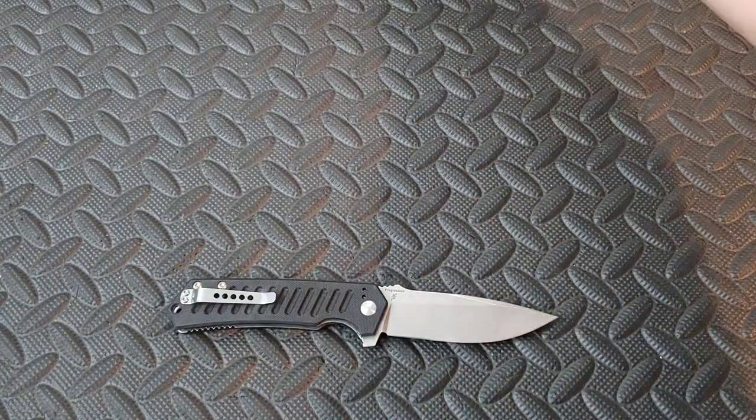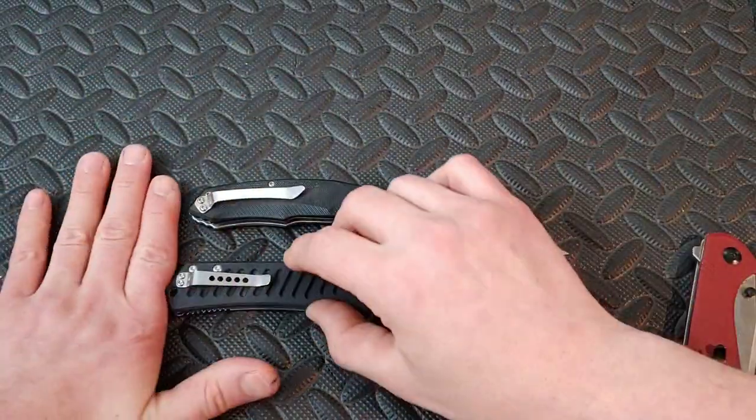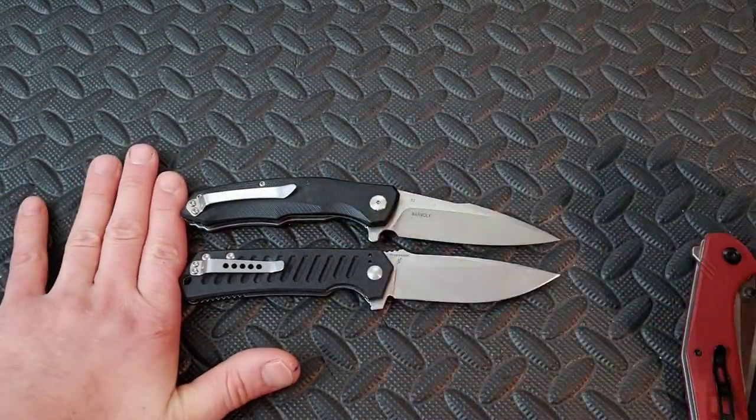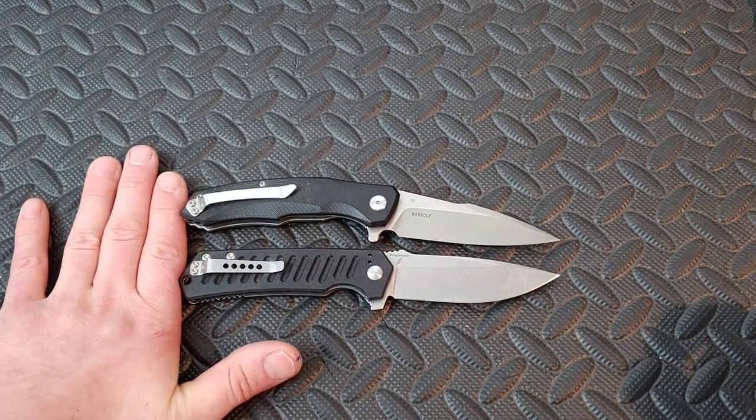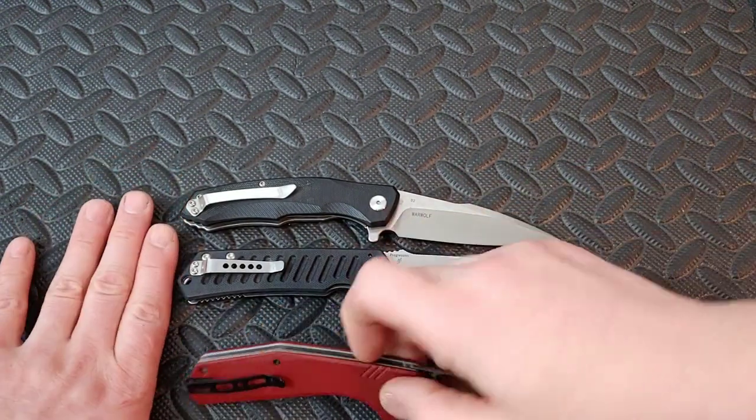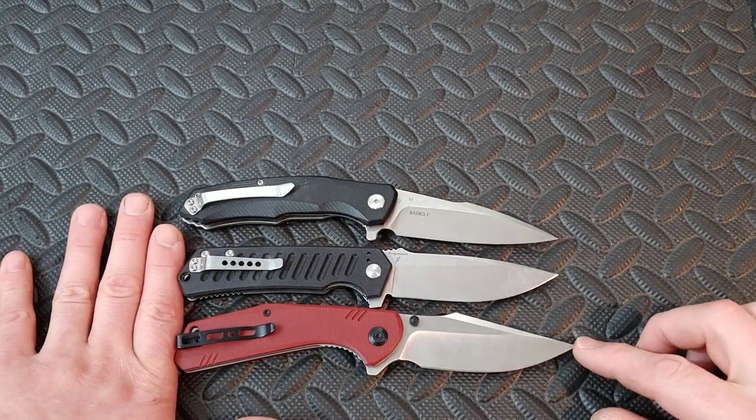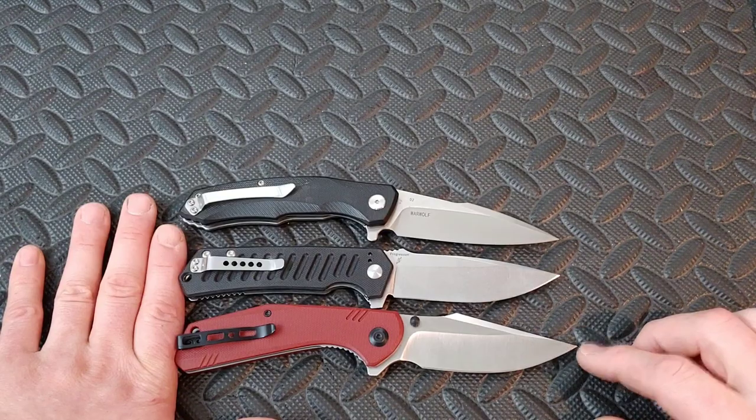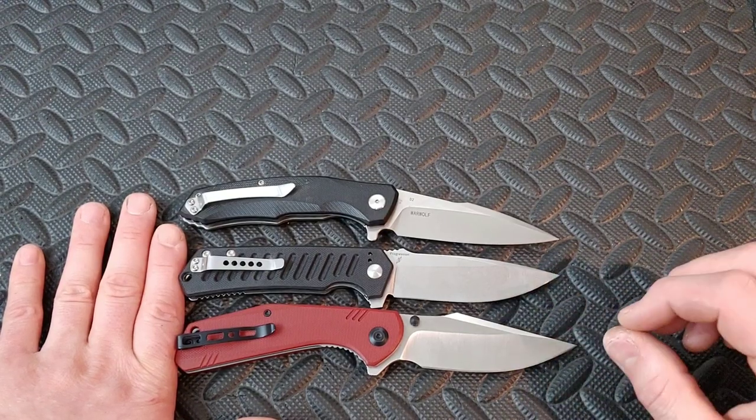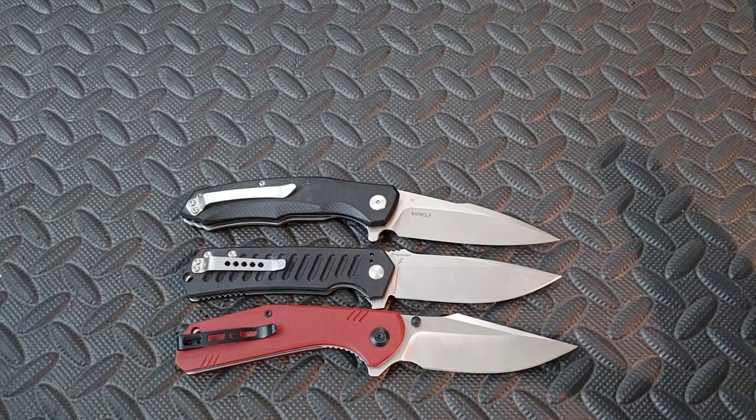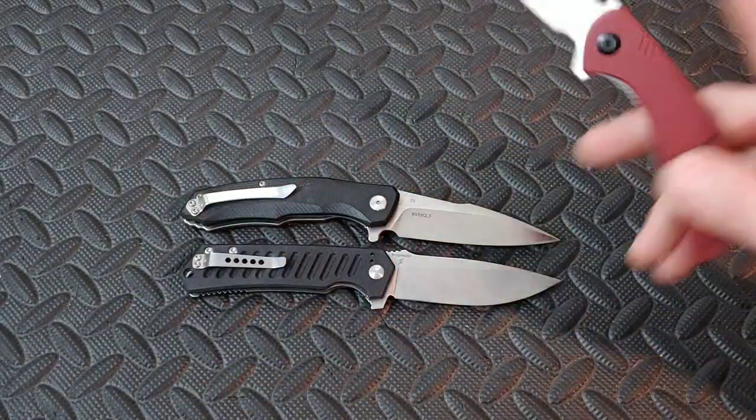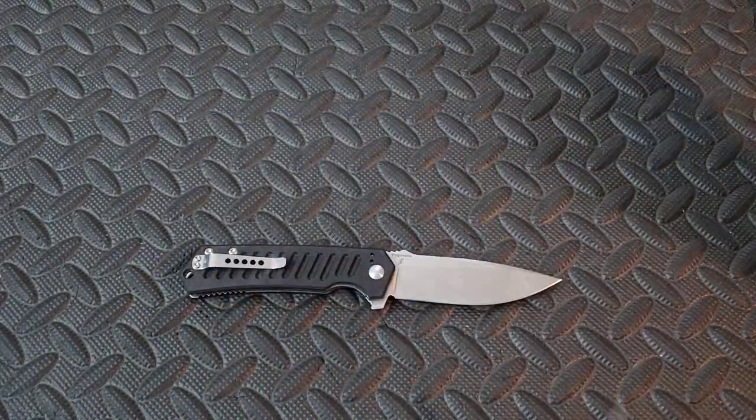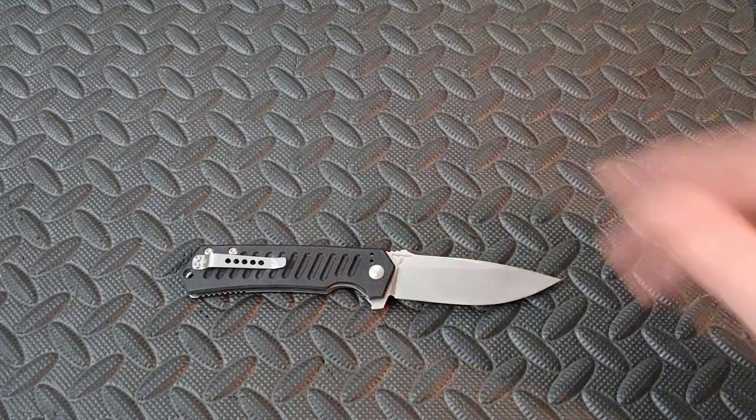And then one more. Or, you know what, we'll do two side by side. Here's the Bestech Warwolf. Great, great knife. About the exact same size as the Warwolf. And then here is the Sencut Actium. And the Actium is barely longer. Barely, but just a tiny bit. So if you know those knives, you know right around the size of this knife.